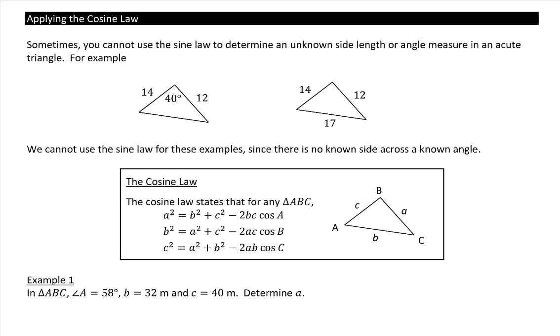Next we're looking at applying the cosine law. Sometimes you cannot use the sine law to determine an unknown side length or angle measure in an acute triangle. There are two examples shown here. In the first example we see we have two sides and the angle between them, but there is no known angle across a known side, so therefore we cannot use the sine law.